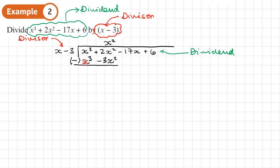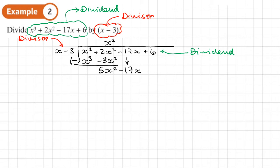In the second column, we've got two X squared minus negative three X squared, which is two X squared plus three X squared, giving five X squared. Be careful when subtracting a negative. That completes one cycle of the algorithm. Now we bring down the next term — minus 17X — and start the algorithm again.